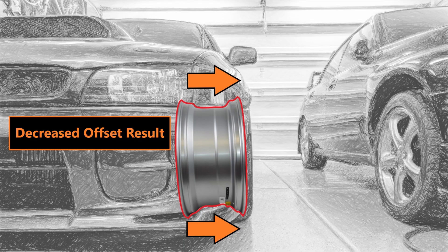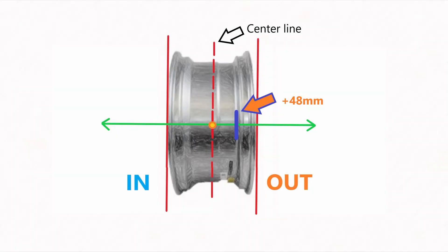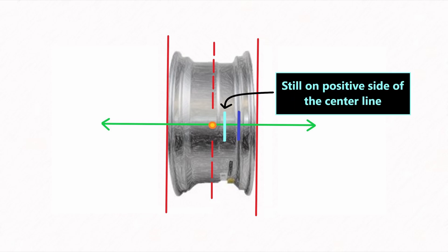So where does it get confusing? Most modern vehicles have a positive offset from the factory. Let's say mine was plus 48 millimeters. Getting a lower offset does not mean your offset is now negative. It means you have a lower offset.